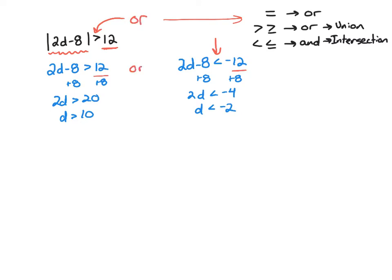So I write 'or' in between my two inequalities. On my graph, I'll place negative 2, 0, and 10. Graphing them individually: d is greater than 10, so I start at 10 going to the right. Or d is less than negative 2, so I'm going to the left.